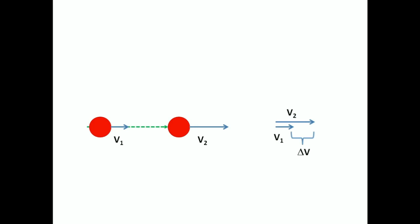Delta v can also be represented visually, as the difference in velocity vectors at point 1 and 2.